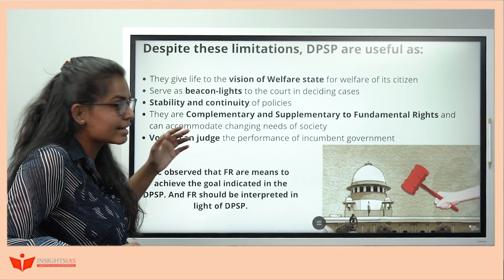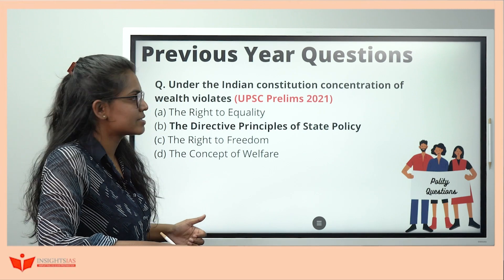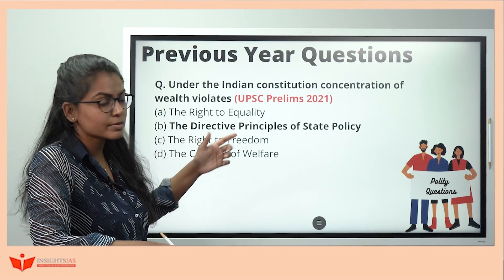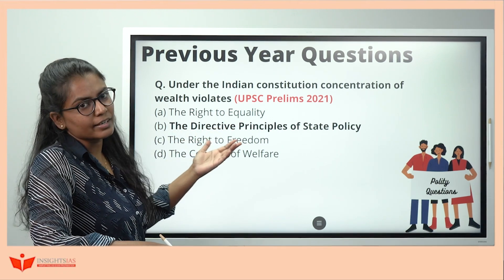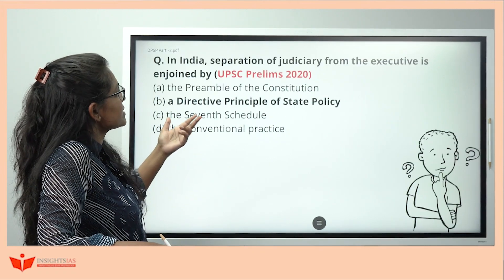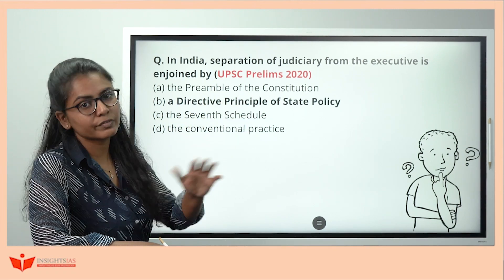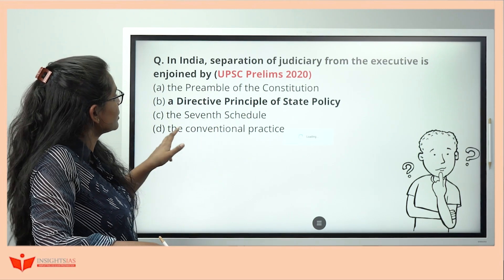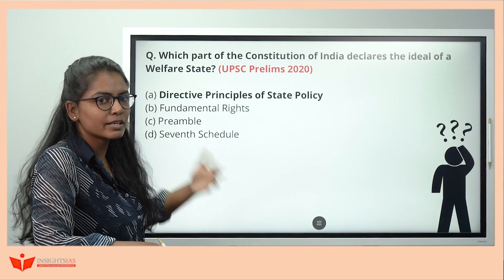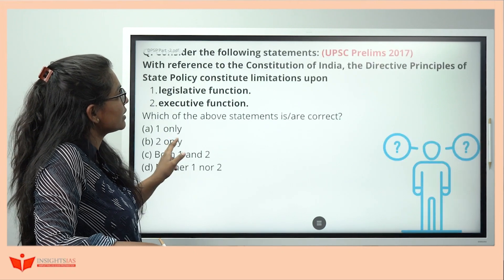Let's solve some previous year UPSC questions. Q1 (2021): 'Concentration of wealth' — we know from Article 39 (LDC goes to PHC), concentration of wealth is covered under Directive Principles. Q2 (2020): 'Separation of judiciary from executive is enjoined by' — Article 50 of DPSP. Q3 (2020): 'Which part of the Constitution declines the ideal of welfare state' — DPSP, as it is made to attain the welfare state.